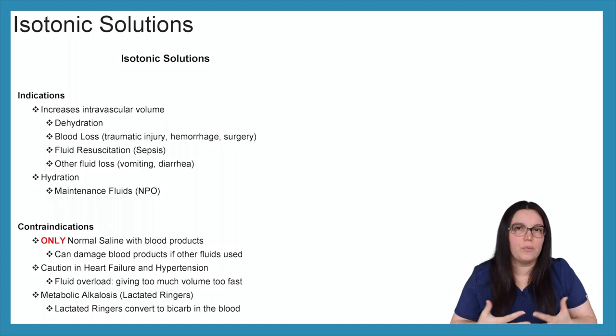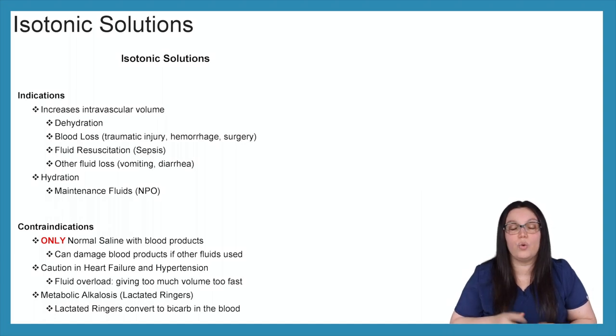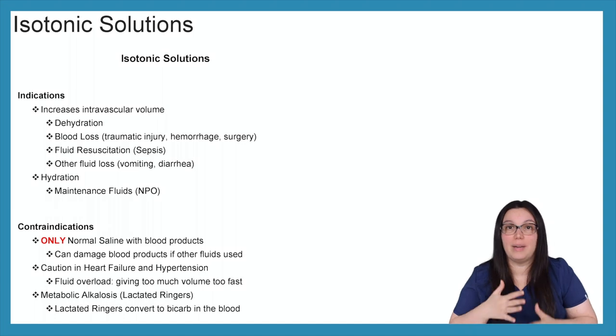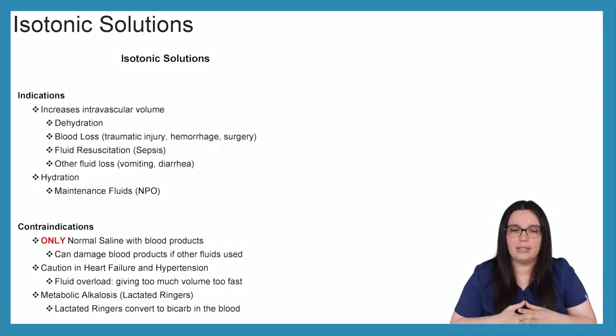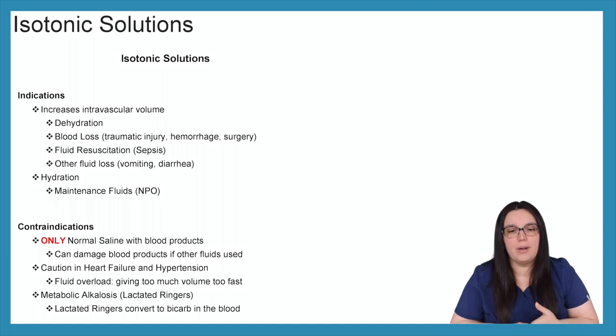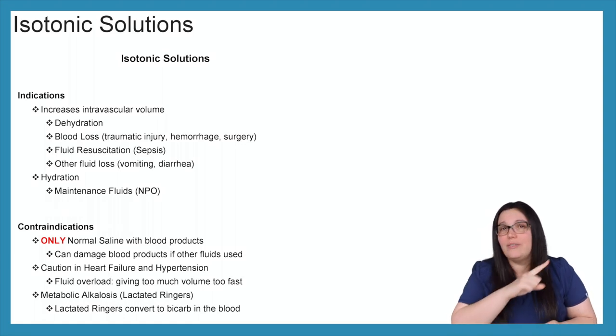Also, we have to use caution when we're giving isotonic solutions to our heart failure and hypertensive patients because it can lead to fluid overload if we're giving too much volume too fast. So we have to find the right balance in order to maintain that intravascular volume. And lastly, metabolic alkalosis with our lactated ringers. Lactated ringers, like we talked about before, converts to bicarb in our blood, causing metabolic alkalosis if we're not reviewing our ABGs appropriately. So I highly recommend that you check out my video on metabolic alkalosis for further understanding of how lactated ringers can affect arterial blood gases, and I'm going to leave a link up here in the corner.